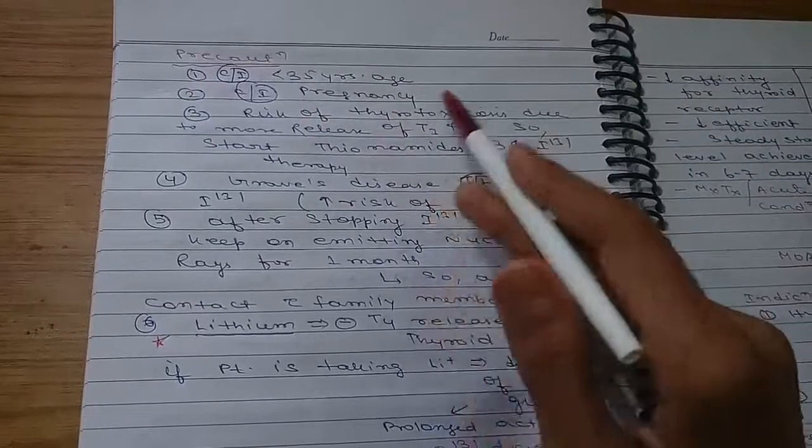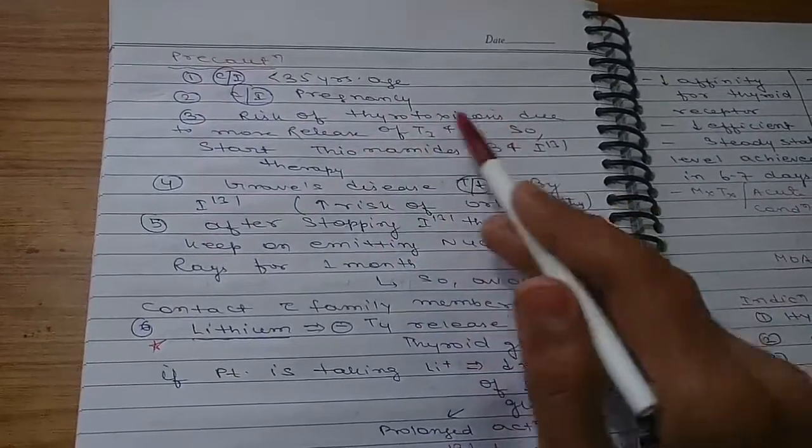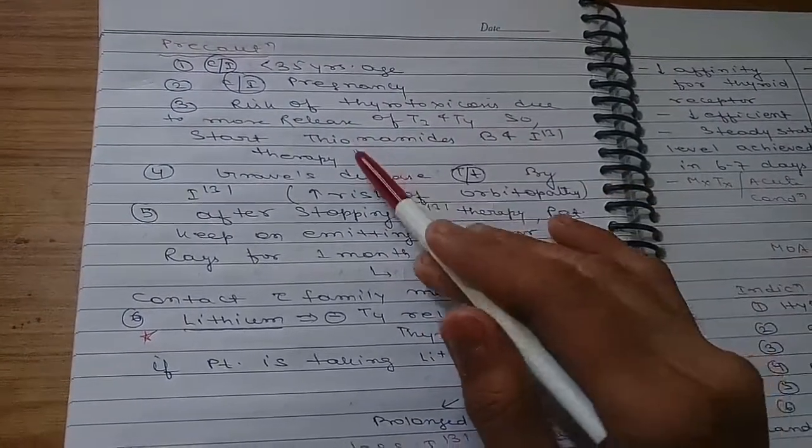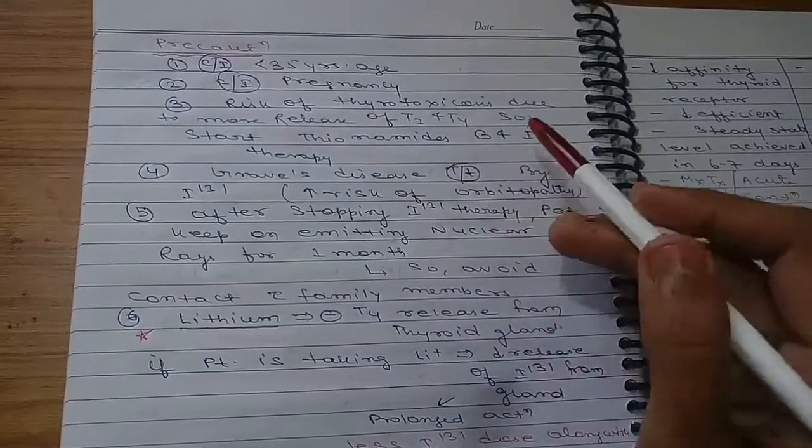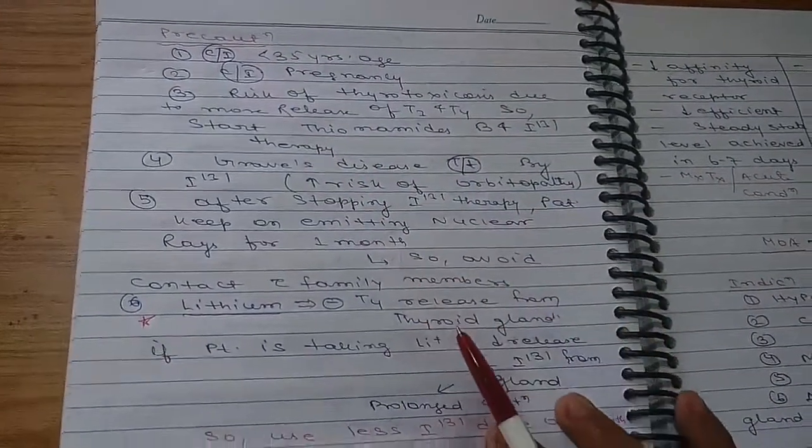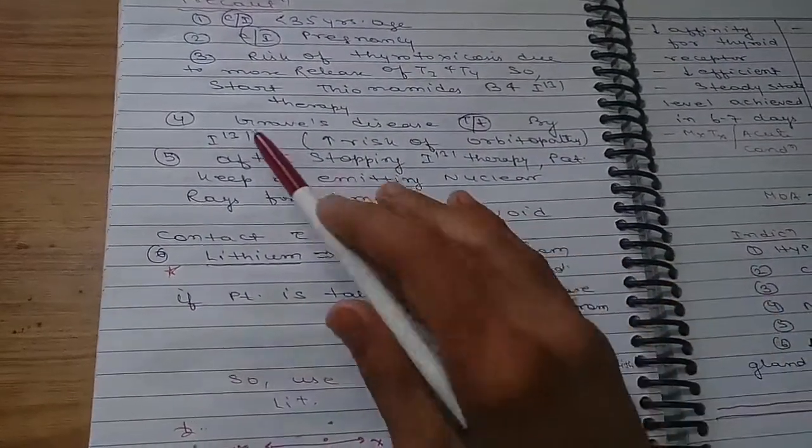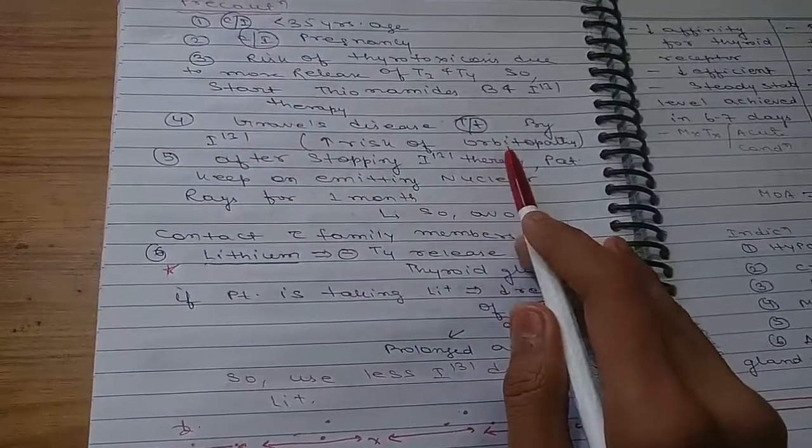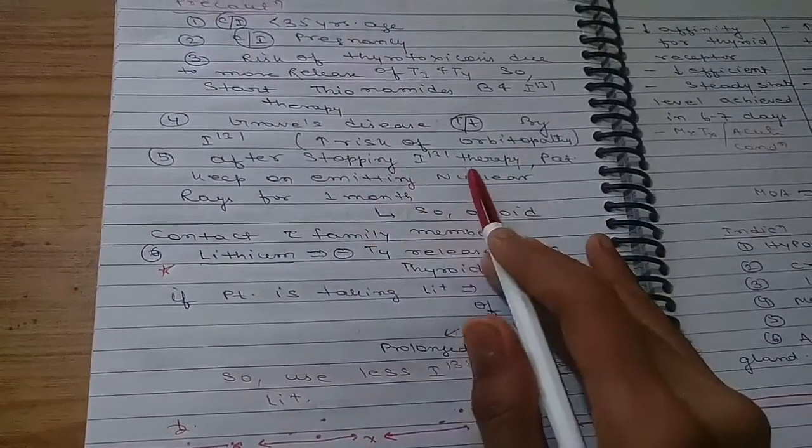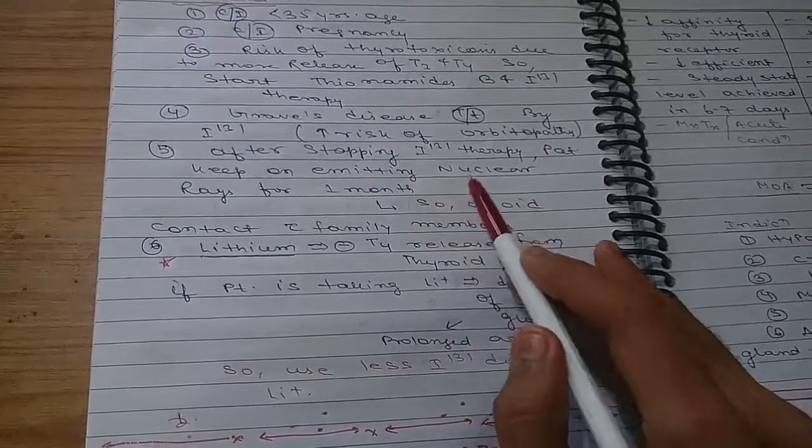Some precautions: it is contraindicated in patients less than 25 years of age, contraindicated in pregnancy. Risk of thyrotoxicosis due to more release of T3 and T4, so start thionamides before I-131 therapy.